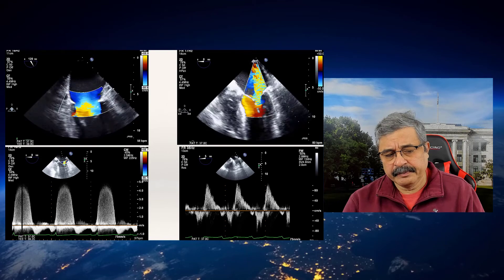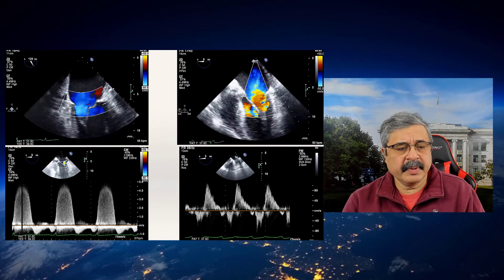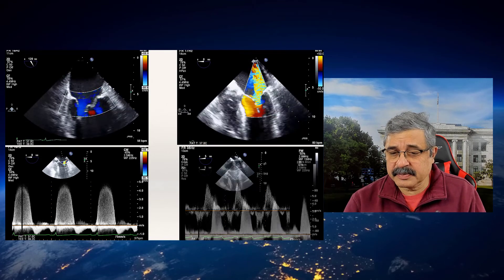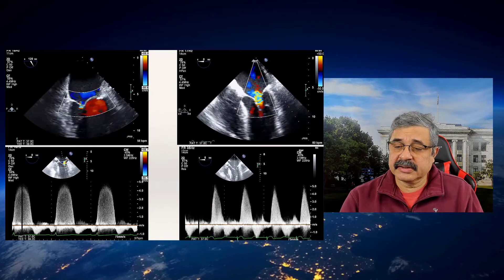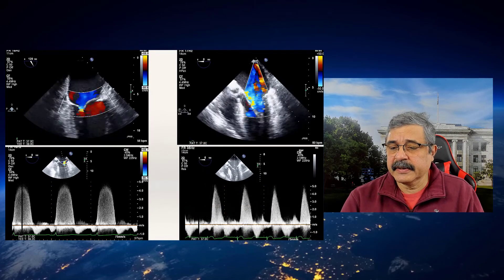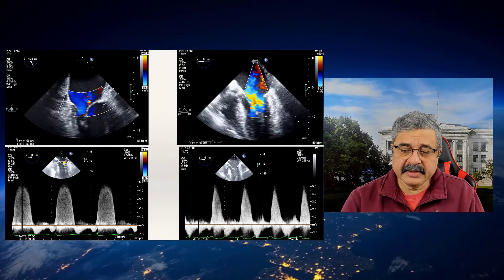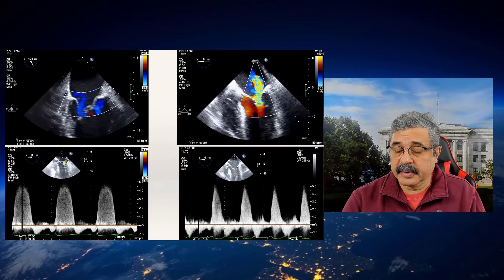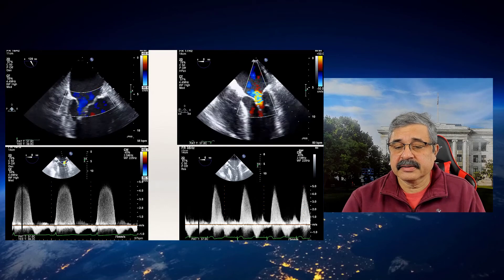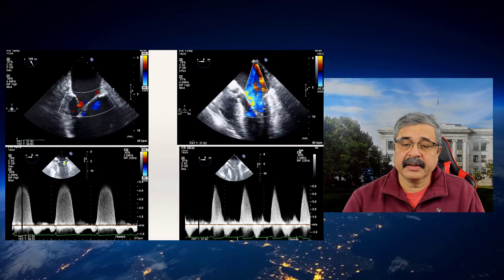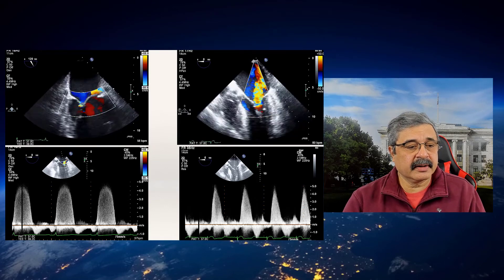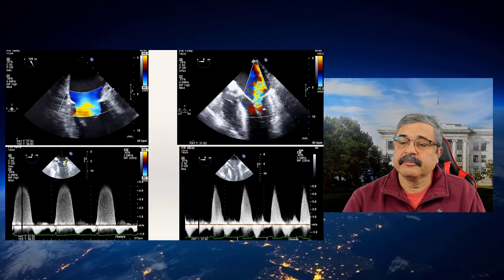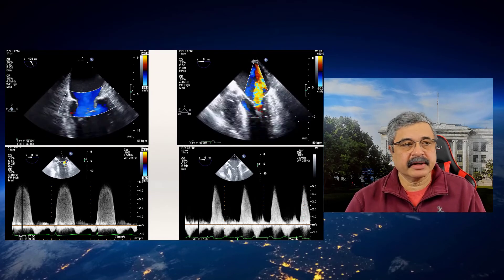an E-dominant pattern, and intensity not as high as in the severe case. When the patient has severe mitral regurgitation, there is higher signal intensity, a predominantly E-dominant transmitral pattern, an E-dominant pulmonary venous flow pattern, and the specific V-wave cutoff sign — all implying severe mitral regurgitation.